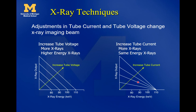In contrast, if we keep voltage fixed at 110 kilovolts and instead turn up the tube current, the maximum x-ray energy stays at 110 keV. The x-ray production stays within the same triangular area, but as we go through different amounts of tube current, we get more or less x-rays out of it.